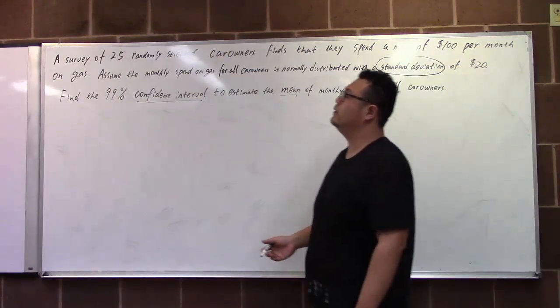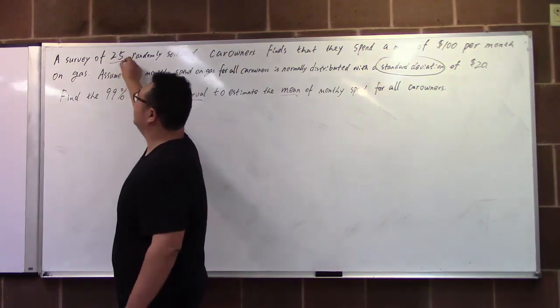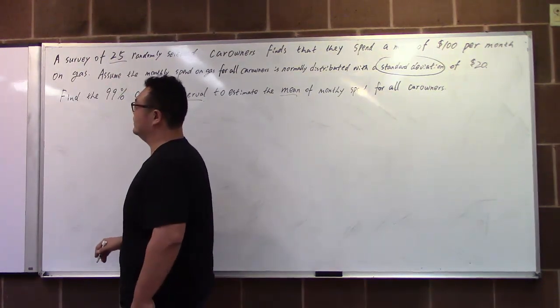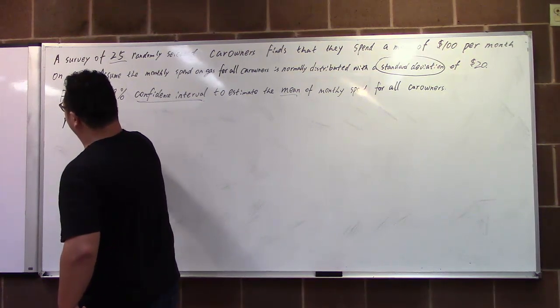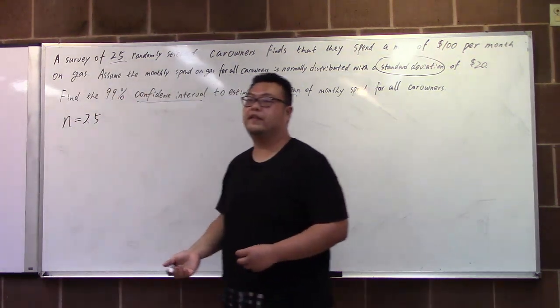Then let's analyze the problem. They take 25 randomly selected customers and that's our n. 25 is our n.